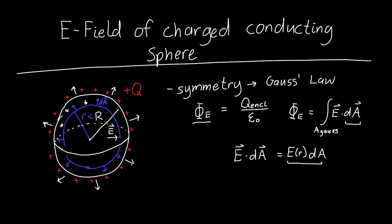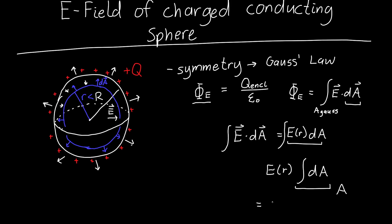If we integrate E·dA, we can pull out E(r) because we're integrating over a surface of constant r. So the integral becomes E(r) times the integral of dA, which is just the area. This equals E(r) times the area of our Gaussian surface — the area of a sphere — which is 4π times little r squared. So we're done finding the electric flux.